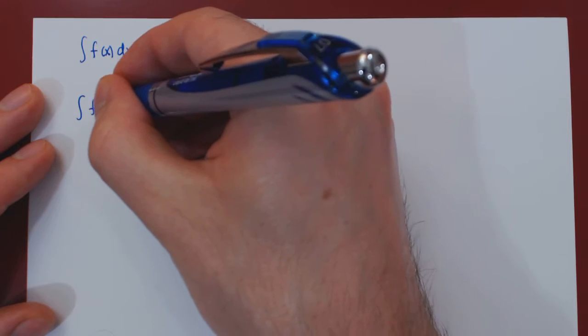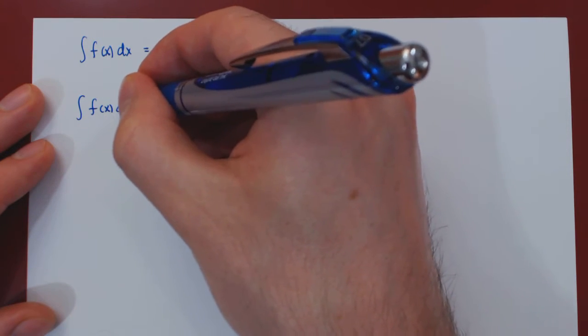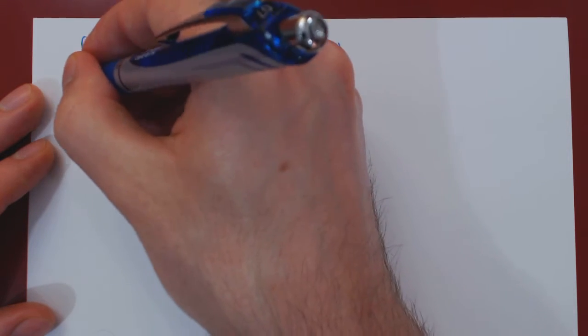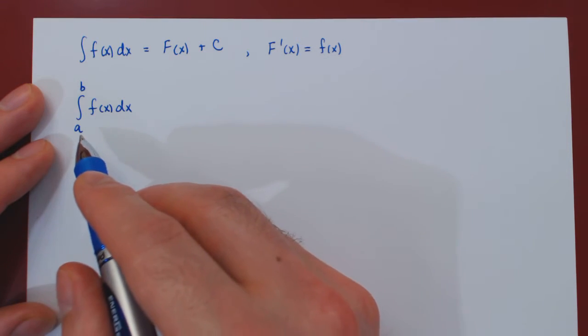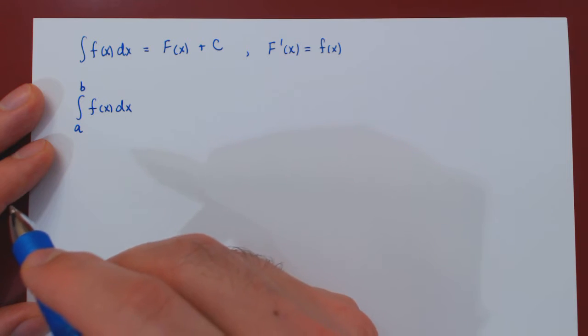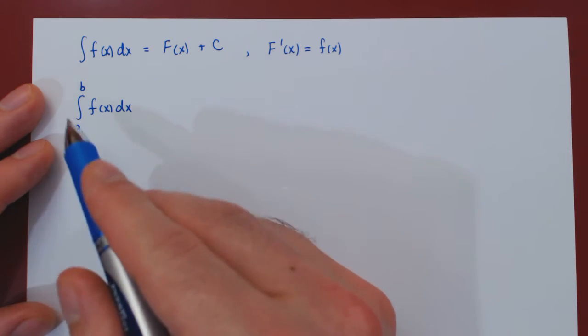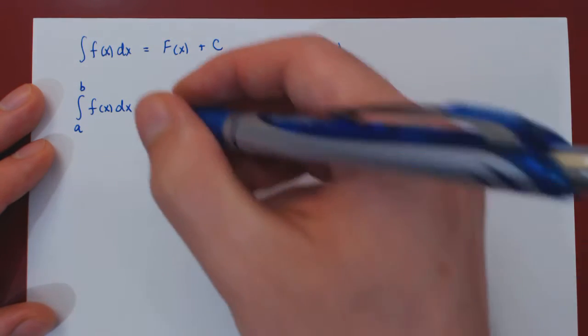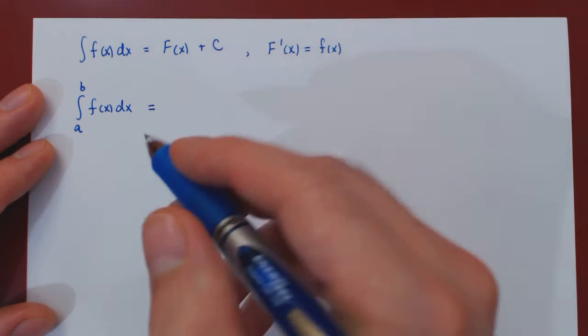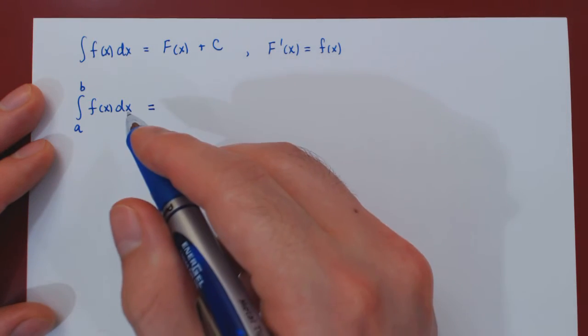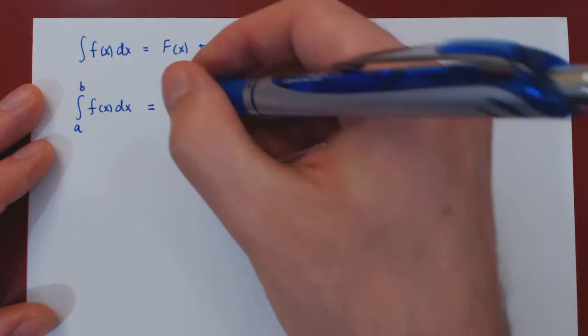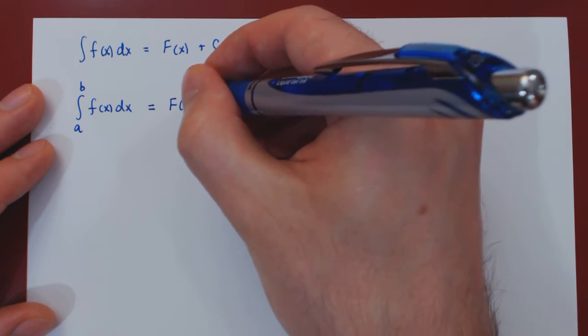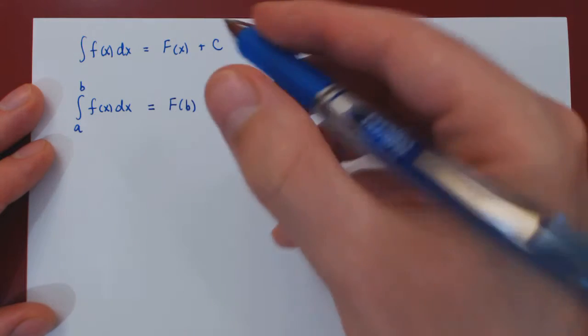And if we look at the definite integral now of f from a to b, so finding the net area under the curve f between x equals a and x equals b, we know that we can bypass the limit of the Riemann sum, and this again is the fundamental theorem of calculus, simply by using an antiderivative of lowercase f and doing F of b minus F of a.